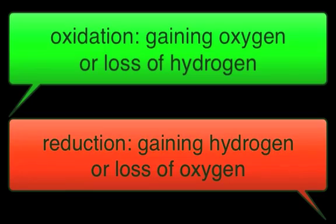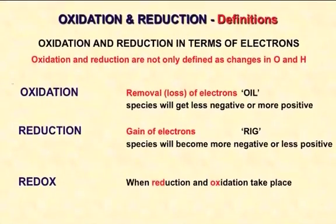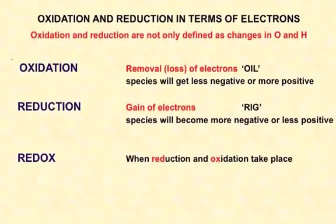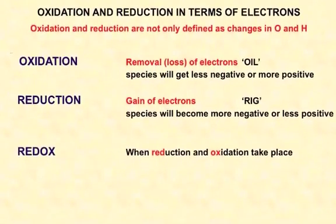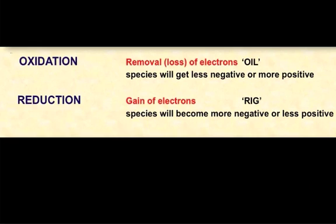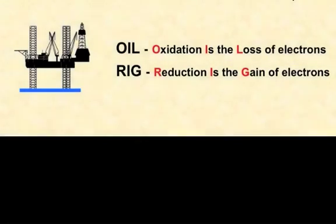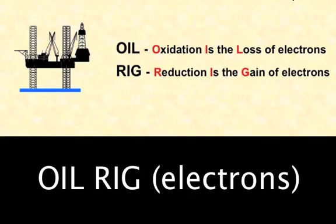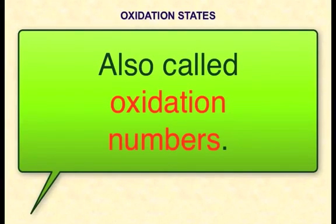So we've got two new definitions here. Oxidation is the loss of electrons, so oxidation is the loss of electrons. Reduction is where something gains electrons, where a species gains electrons. So if it's oxidized you get a species that becomes less negative or more positive. Reduction, it's the gain of electrons so a species becomes more negative or less positive. So here's our little symbol to help us remember: OIL RIG, oxidation is loss, reduction is gain, and we're talking about electrons here.